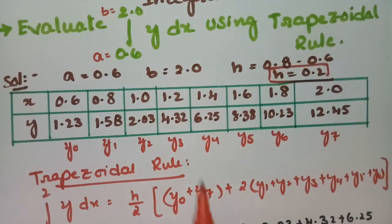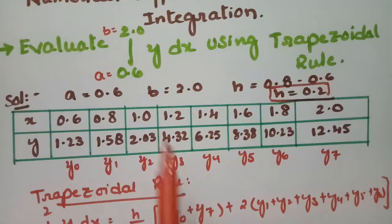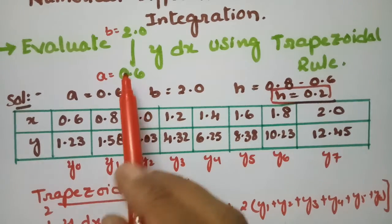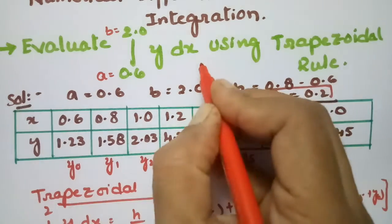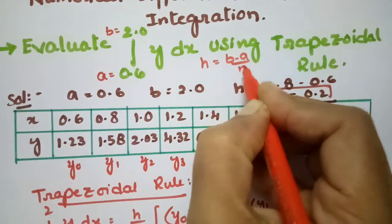Simply, we write the a value and b value. The initial integral limit is a, the final value is b, and for h value, the formula is b minus a by n.